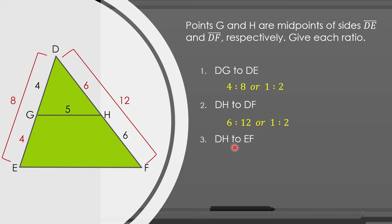Number three: find the ratio of GH to EF. GH is equal to 6 and EF is the third side. Since G and H are midpoints, GH is the midline of the triangle. By the midline theorem, the midline is equal to half the measure of the third side. So if the midline GH is equal to 5, then EF is equal to 10. Therefore, DH is equal to 6 and EF is equal to 10, giving a ratio of 6 is to 10, or 3 is to 5.